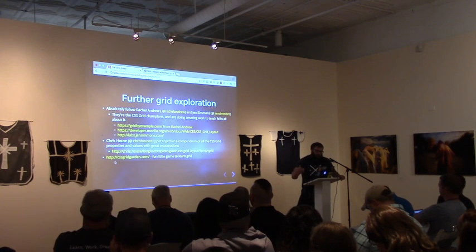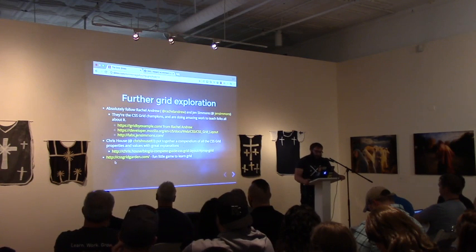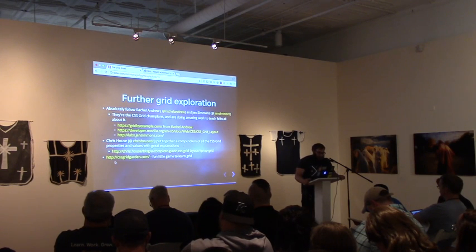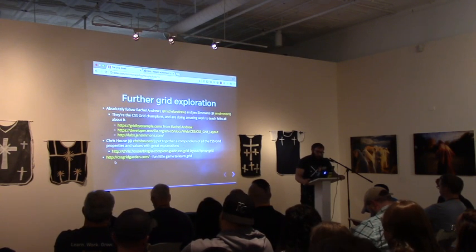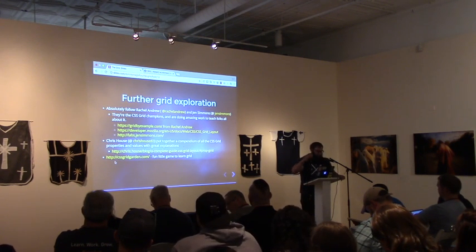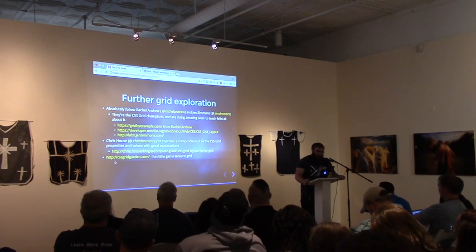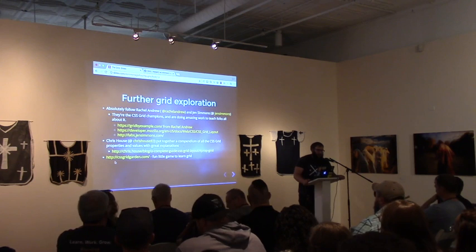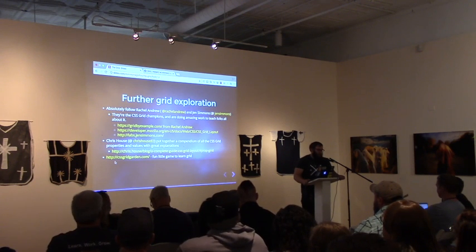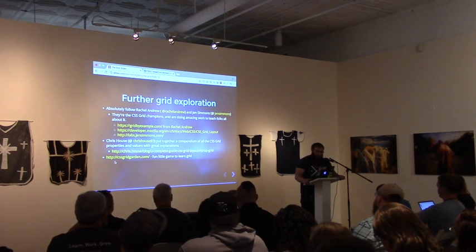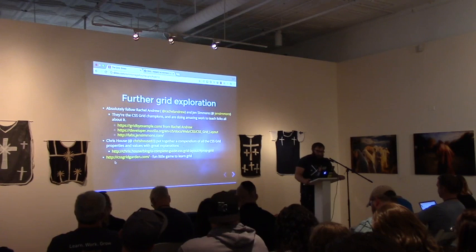Another really good resource is Chris House — he put together a giant compendium of all the CSS Grid properties and values with really good explanations, though he doesn't go into some of the auto-placement algorithm stuff. And last, if you've ever used Flexbox Froggy to learn Flexbox, there's a CSS Grid version called CSS Grid Garden. There are some weird negative values you can use inside grid-column-start and similar properties, and CSS Grid Garden kind of shows you what those do and how to use CSS Grid.